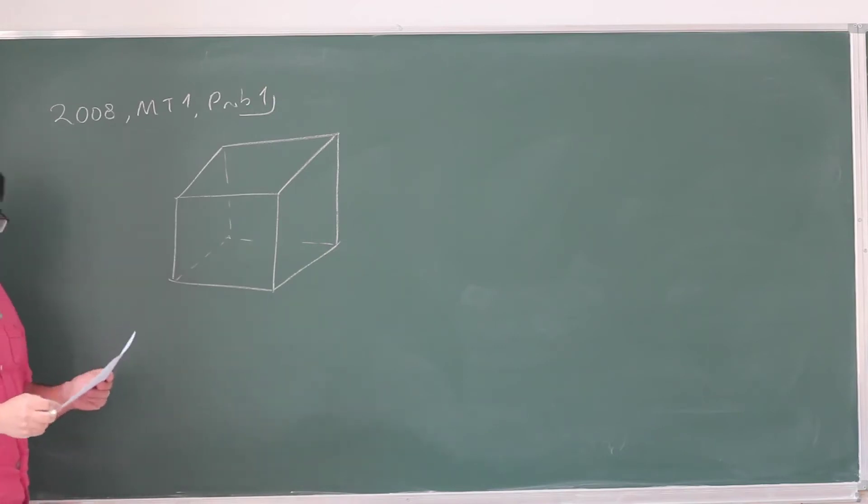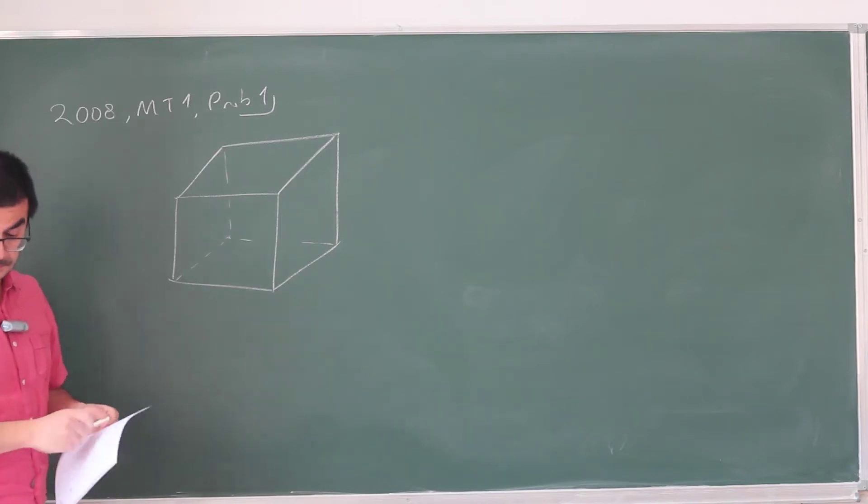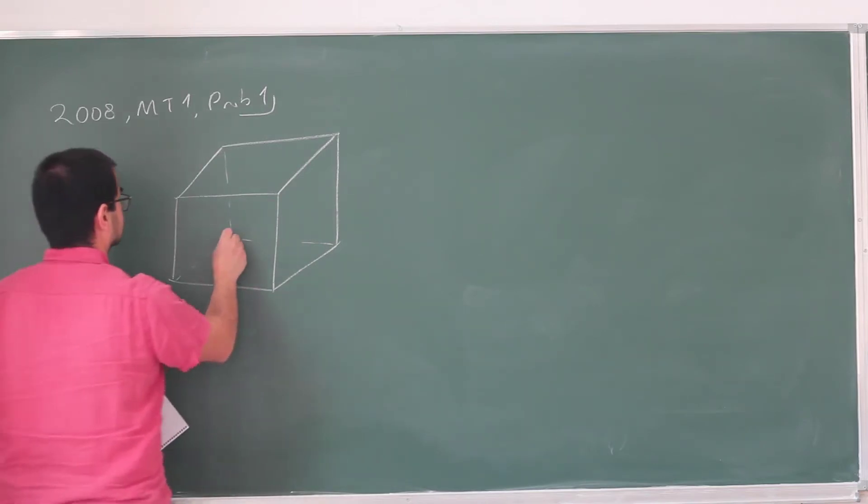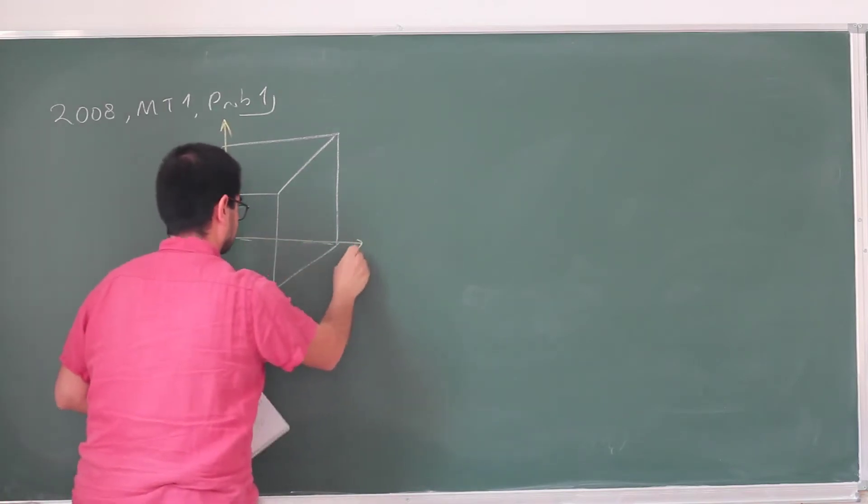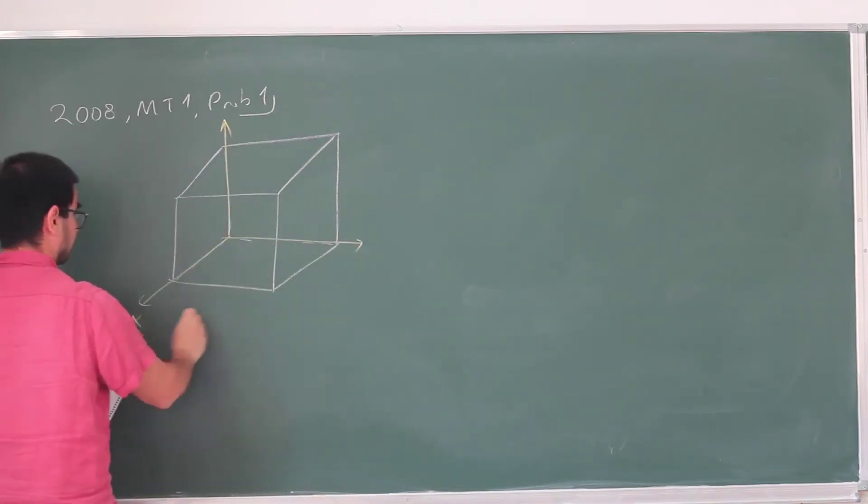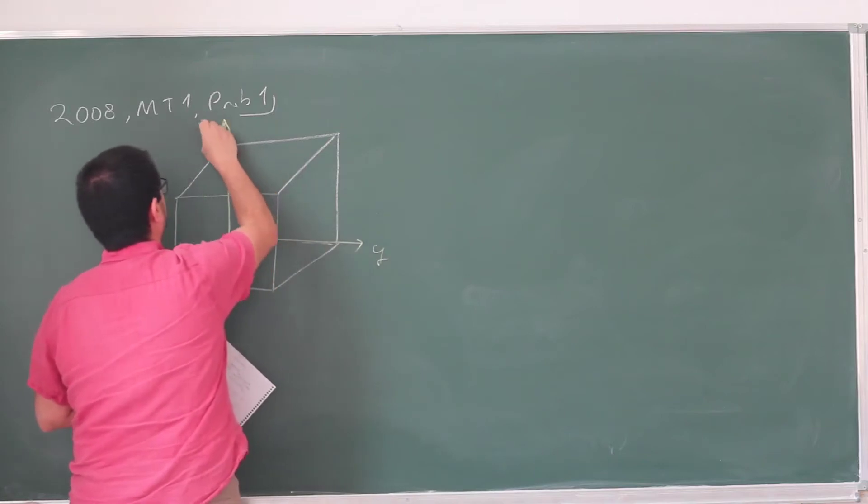Let's draw this. The cube is given such that this corner lies at the origin of the coordinate system. And our coordinate system looks like this. This is x, this is y, this is z.